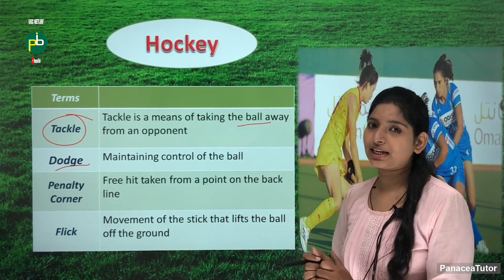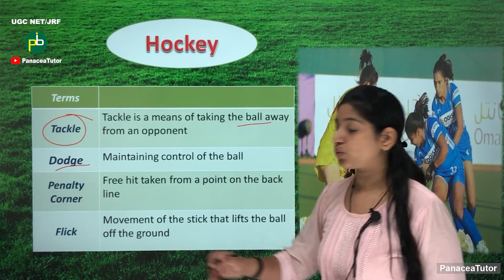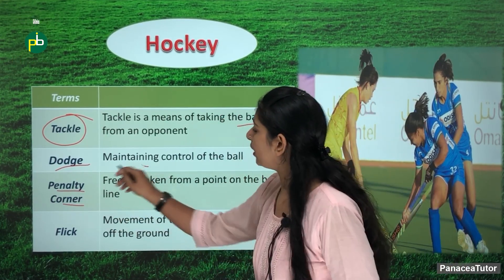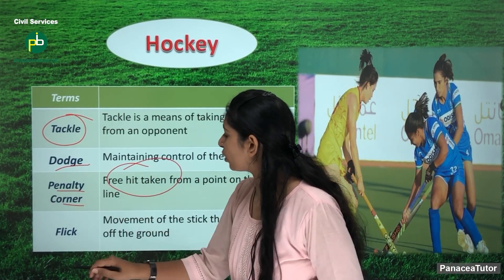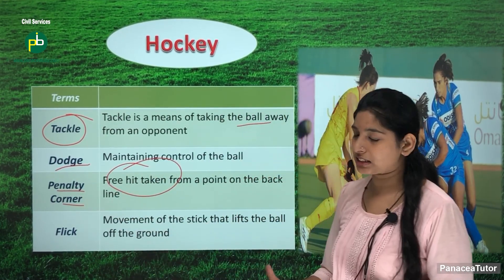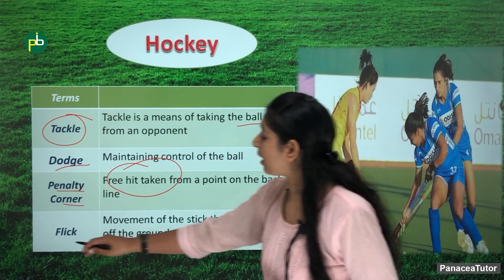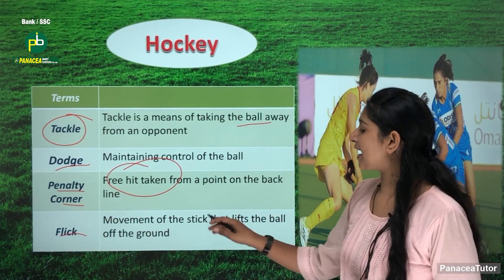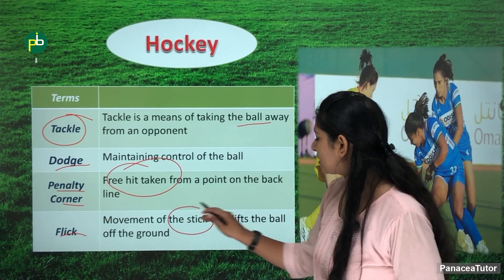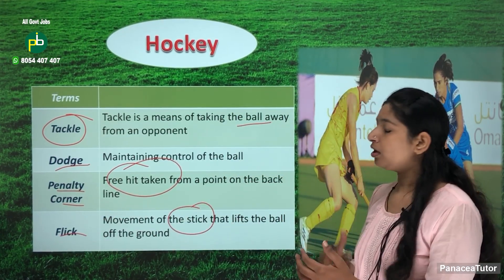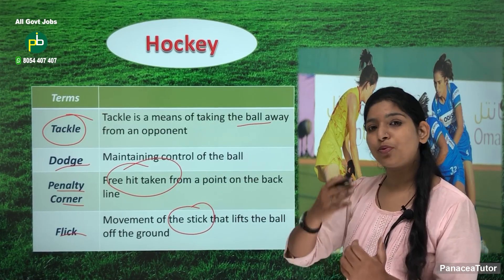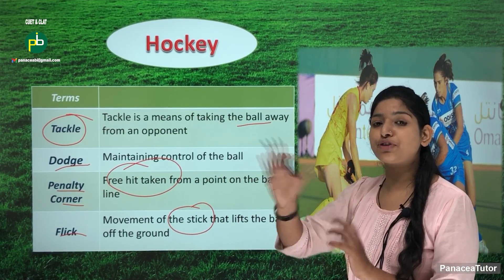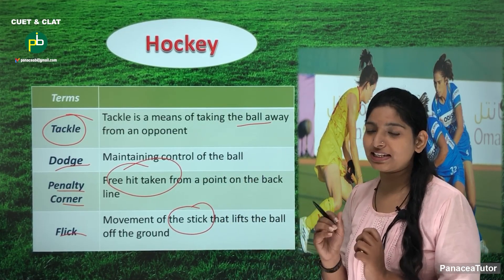The next one is penalty corner. What is the penalty corner? It is a free hit taken from the back line. This is flick — flick means a movement with the stick that is able to lift the ball off the ground. That is flick.